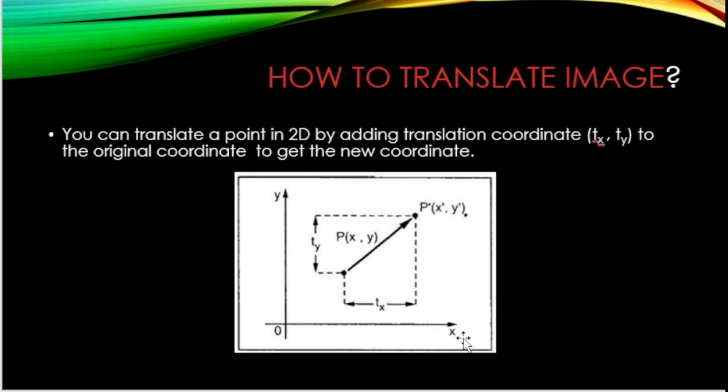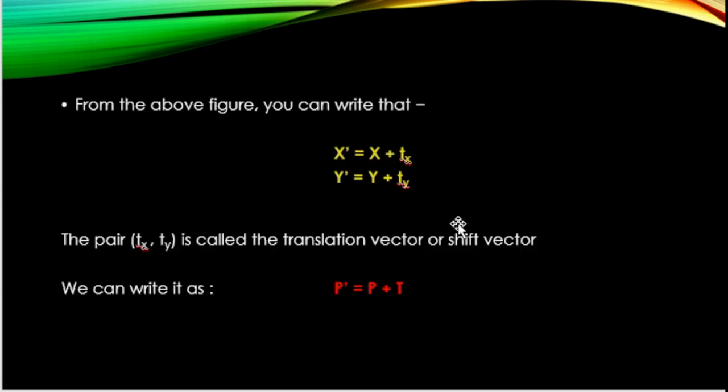If we add tx to x, we get a new coordinate in translated form. If we add ty to y, we get a new coordinate in translated form. In this way we can translate an object or 2D image.